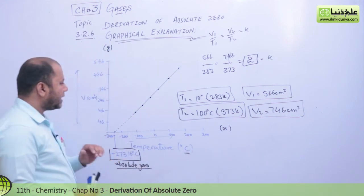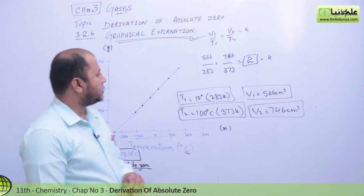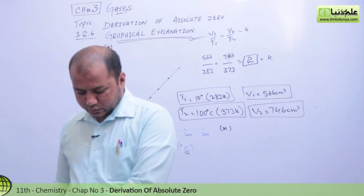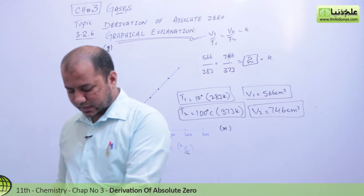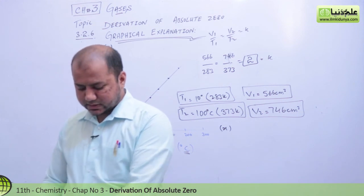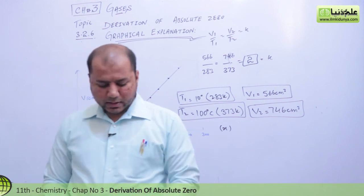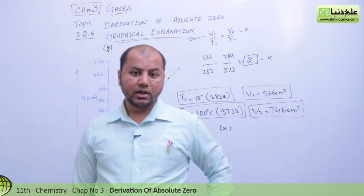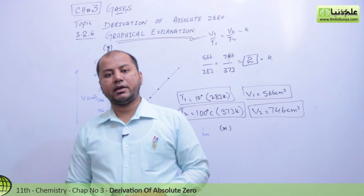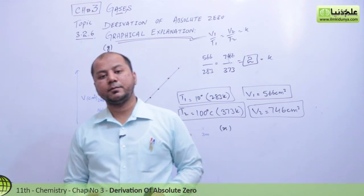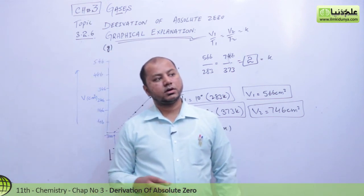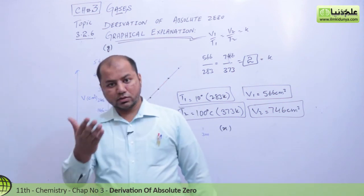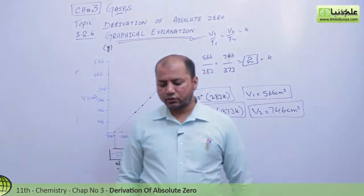I really hope this graph has explained something about Charles Law, and I hope you have understood something from this lecture so you can write it in your board exam. In my next lecture, which is the next part, I will explain section 3.2.7 — scales of thermometry — which temperature scales are used for temperature observation. Thank you so much.